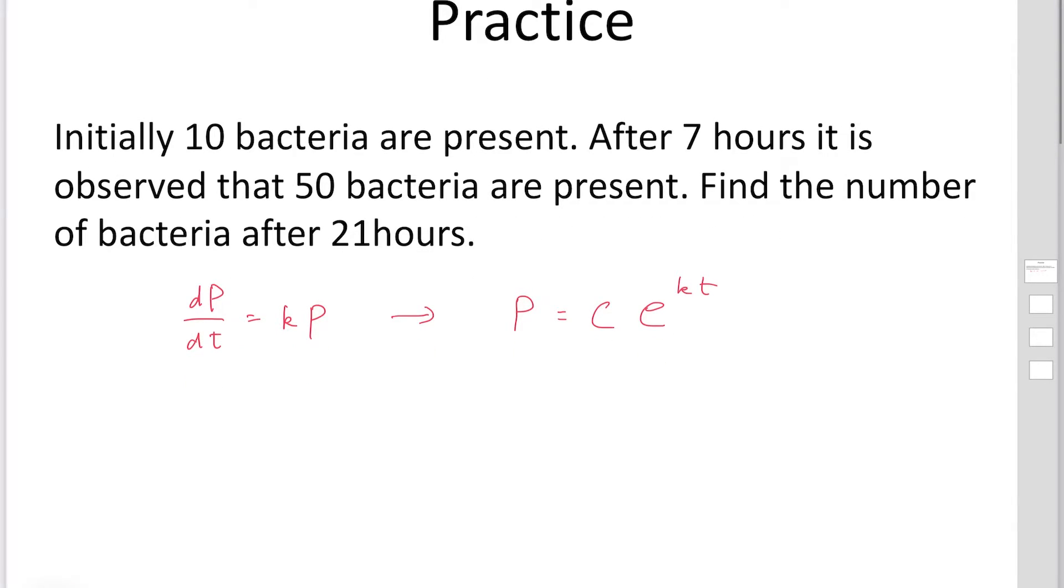In this equation, we have two unknown constant values, C and k. We'd like to determine these two unknown constants using the initial conditions and the other information.